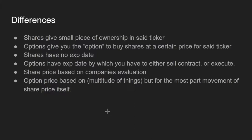Option price, on the other hand, is based on a multitude of things, but for the most part it's the movement of the share price itself. There are Greeks — like time decay and implied volatility — which I'll get into in another video. But mainly it's based on what the share price does, which is why we do technical analysis to see if the stock will be jumping, since we want to catch that jump. Shares can't decay over time — the only time shares lose money is when the stock price goes down.